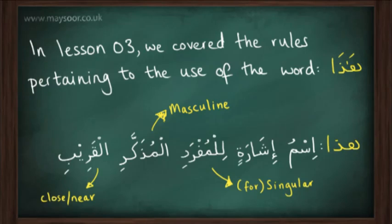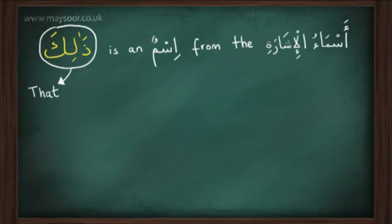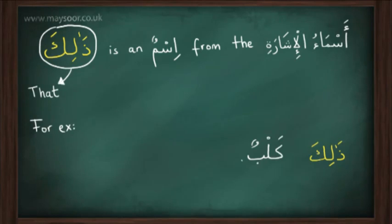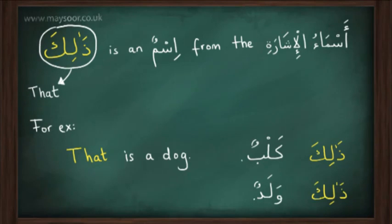However, in this lesson we're going to be looking at the word ذالك and the conditions for its use. ذالك is an ism from the اسماء الإشارة. It means 'that'. For example, we can say ذالك كلب, which means 'that is a dog', or we can say ذالك ولد, which means 'that is a boy'.